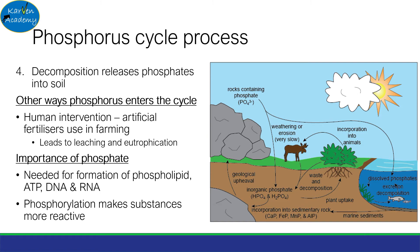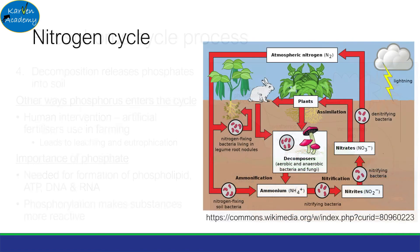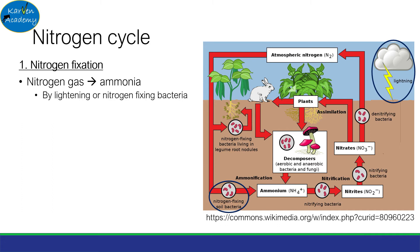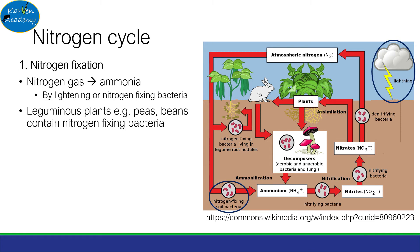Now let's move to the nitrogen cycle — this is going to be information-laden, so prepare yourself. Firstly, there is nitrogen fixation, where nitrogen gas is converted to ammonia, which can be due to lightning or nitrogen-fixing bacteria. A point to note is that leguminous plants, like peas and beans, contain this nitrogen-fixing bacteria in their roots.